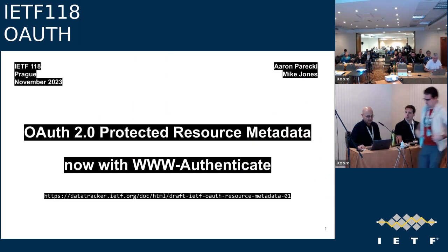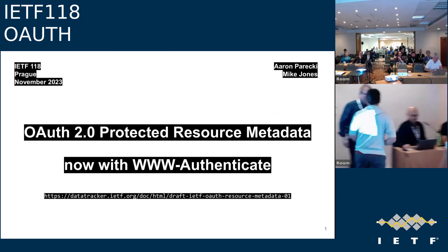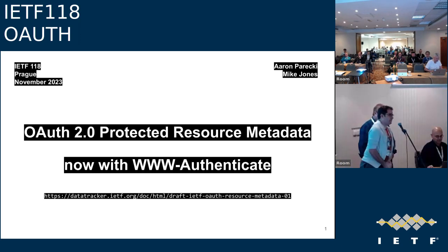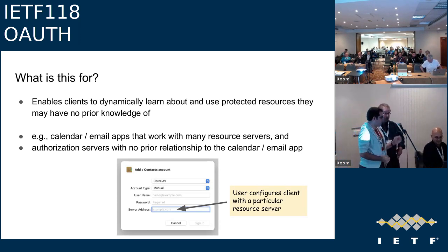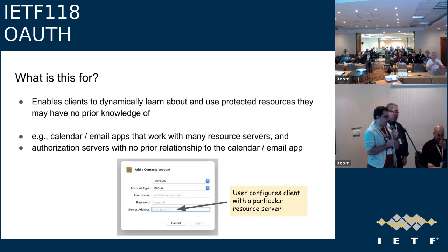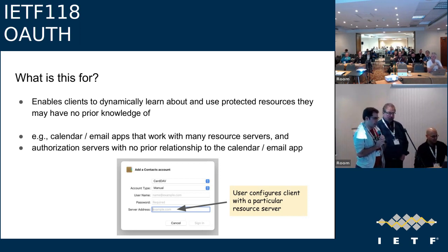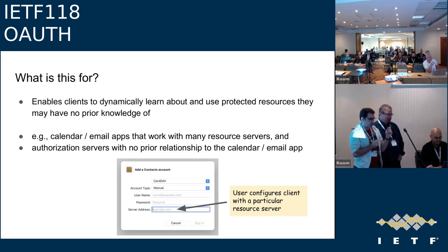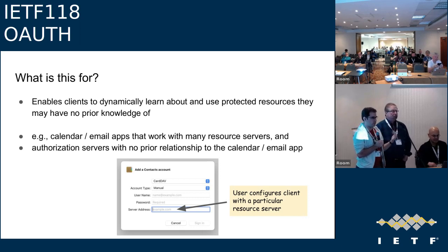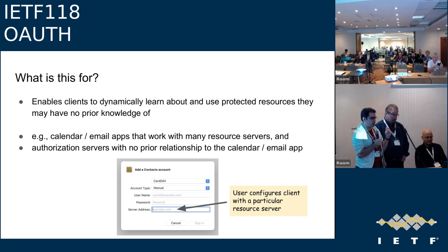Hello, I'm Mike Jones, and my partner in crime in this venture is Aaron Parecki. Quick recap on what this specification is for: this is the now-called resource server metadata, previously combined with authorization server discovery. The point of this is for clients — like mail apps or calendar apps — that don't have their own relationship with an OAuth or authorization server, because the whole point of those apps is that you can use whatever account you want with them.